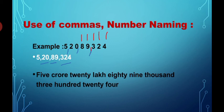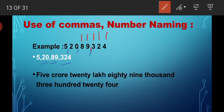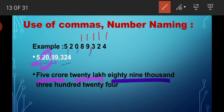After inserting the commas, you can write the number name easily using the place value chart. For example: 5 is in the crore period, so write five crore. 20 is in the lakh period, so write twenty lakh. 89 is in the thousands period, so write eighty-nine thousand. The last three digits are 324, so write three hundred twenty-four. In this way you can write the number name of any number.